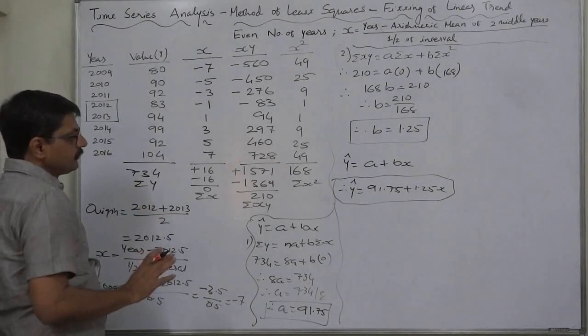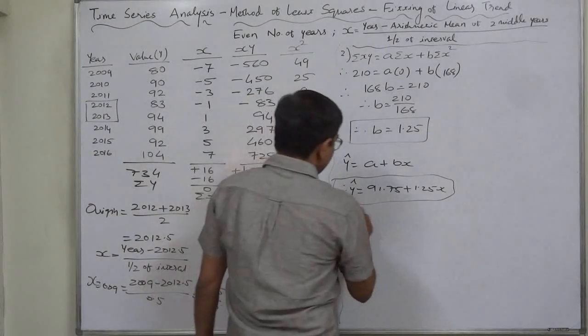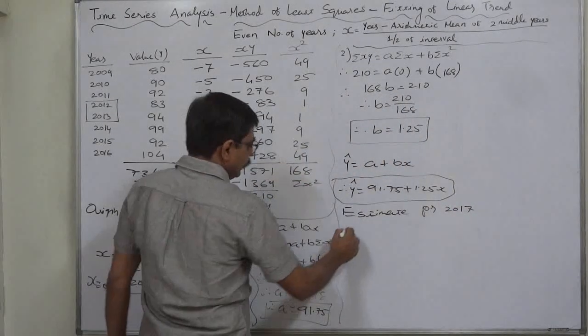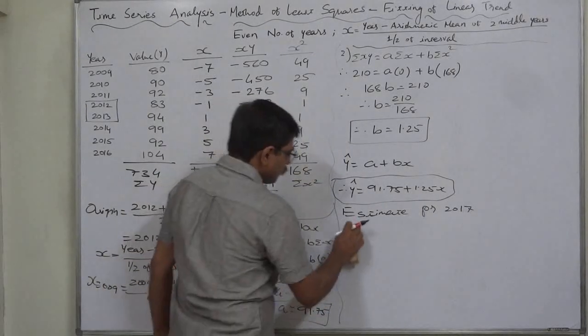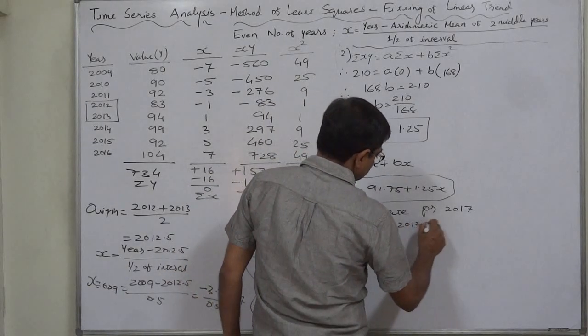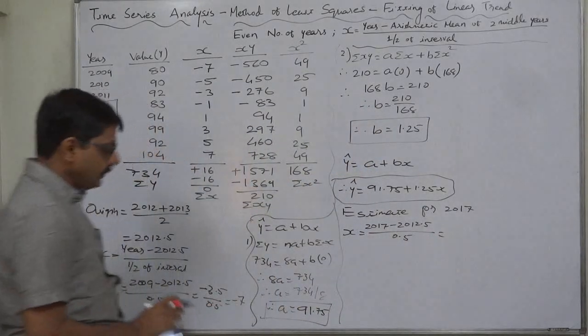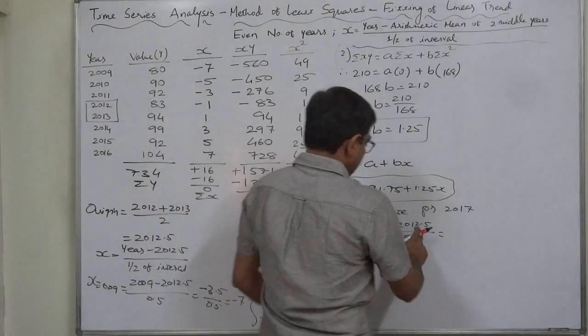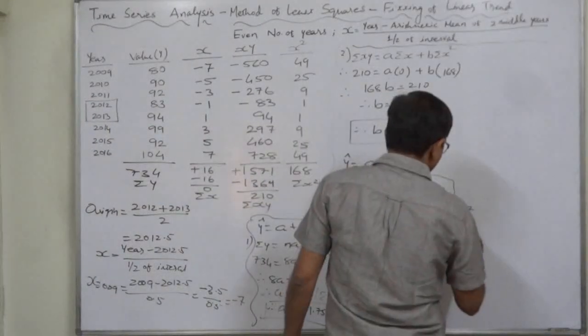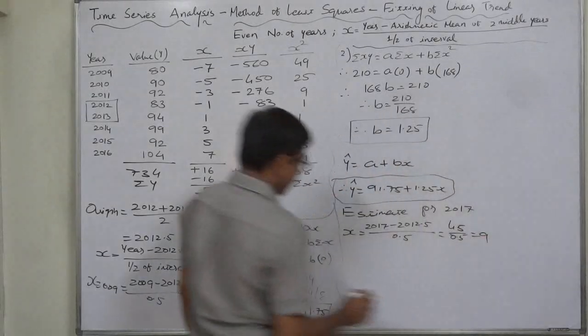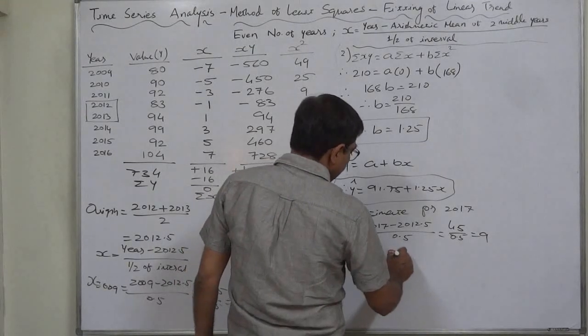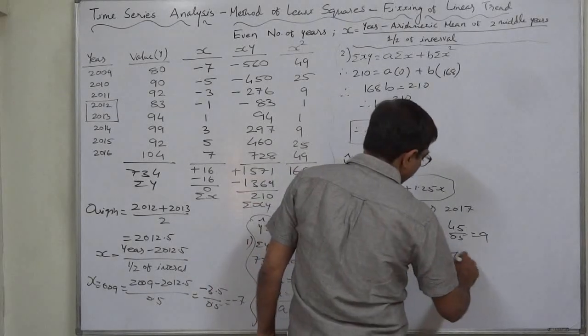Now we are going to find out the estimated value of Y for the year 2017. First of all, we have to find out the value of X for 2017. 2017 minus 2012.5 divided by 0.5, it will be 4.5 divided by 0.5, so it will be 9.